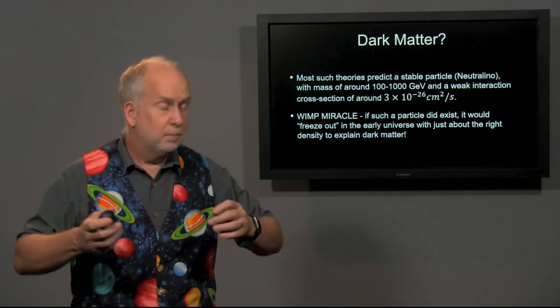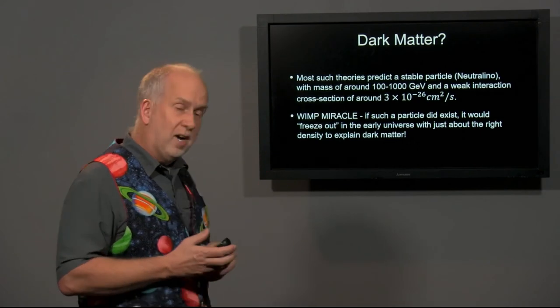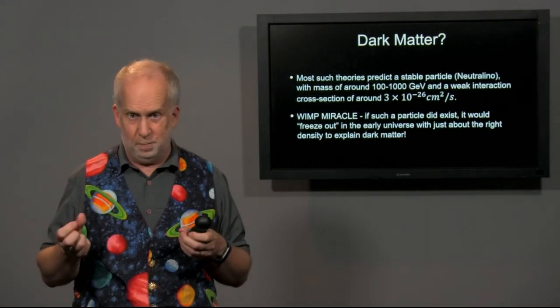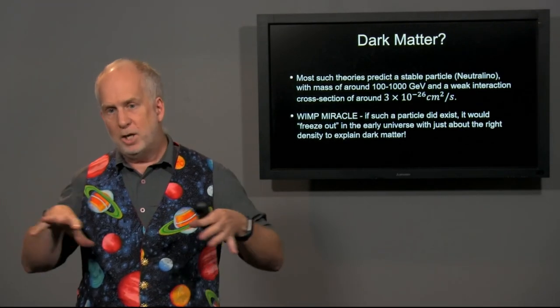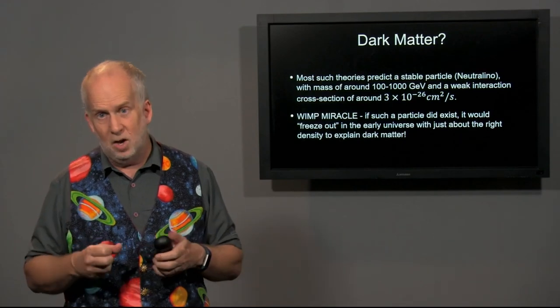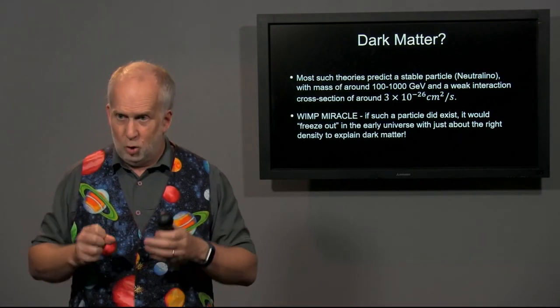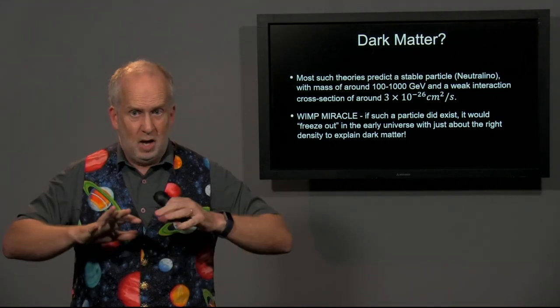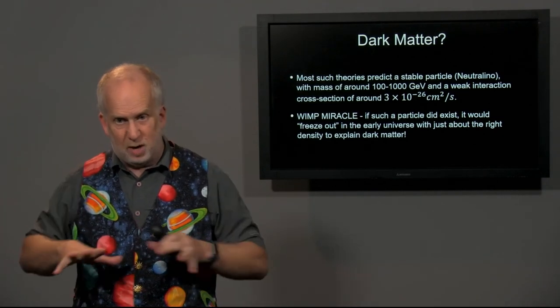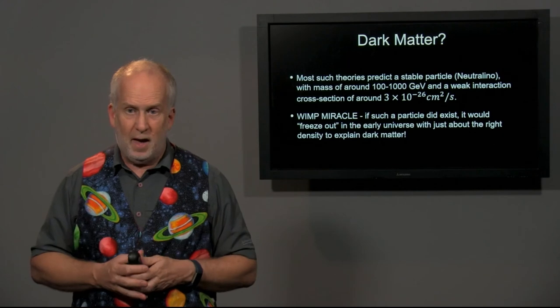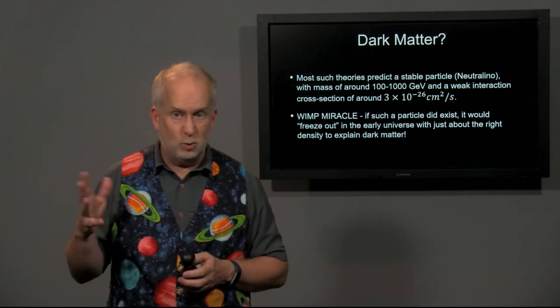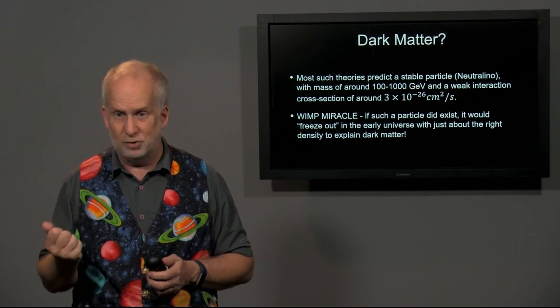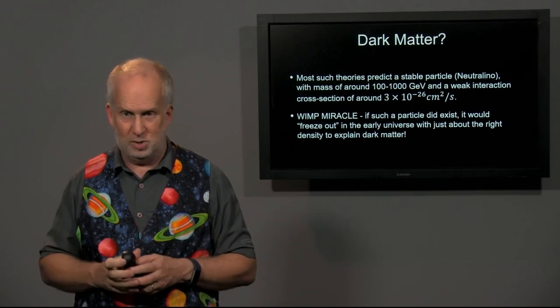And you can calculate this. And what you find is that if you have a particle with these particular properties, this mass and cross-section, you can look at how much of it there should be left over today after what's called this freeze-out, when the energy drops below the energy that allows them to constantly be created, but some of them survive because they're spread apart by the expansion of the universe. And it turns out to be about 20-25% of the current critical density of the universe, which matches the density of dark matter. So that's pretty exciting.